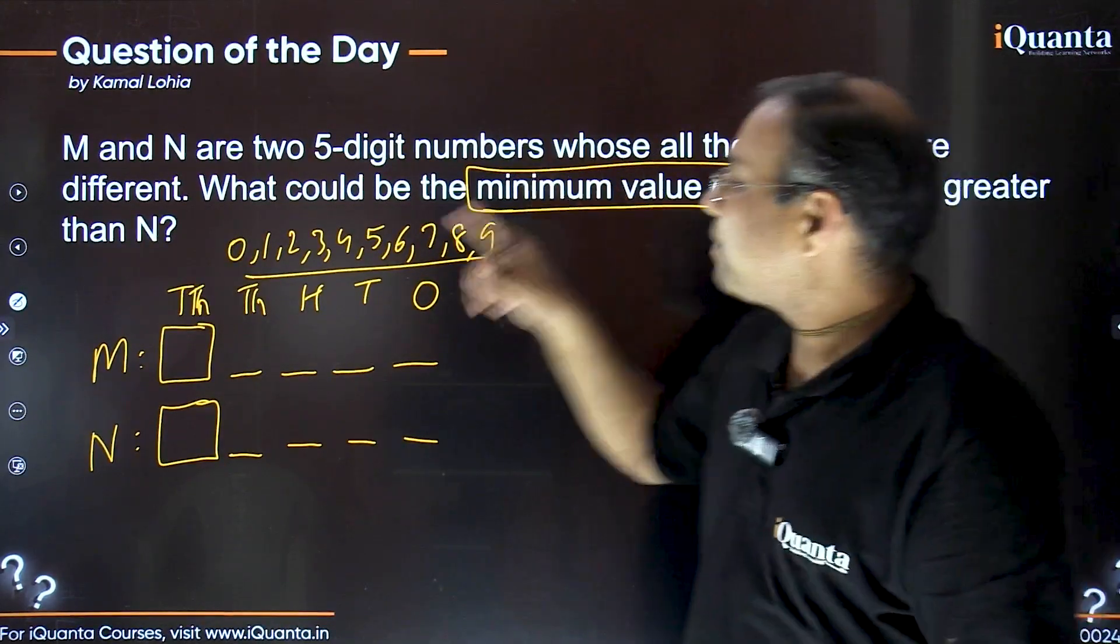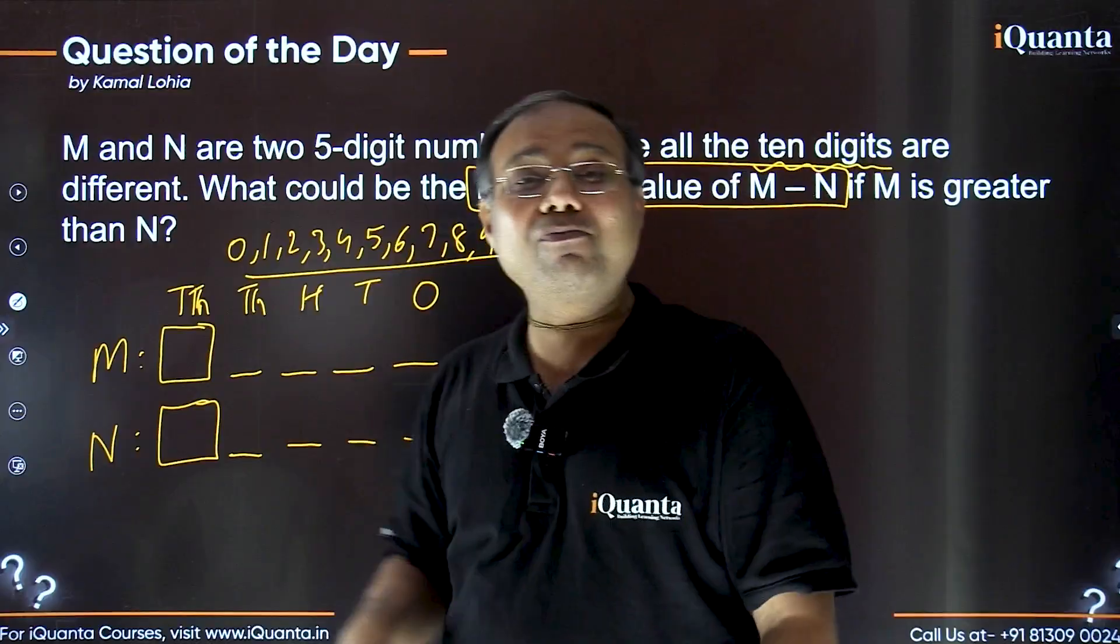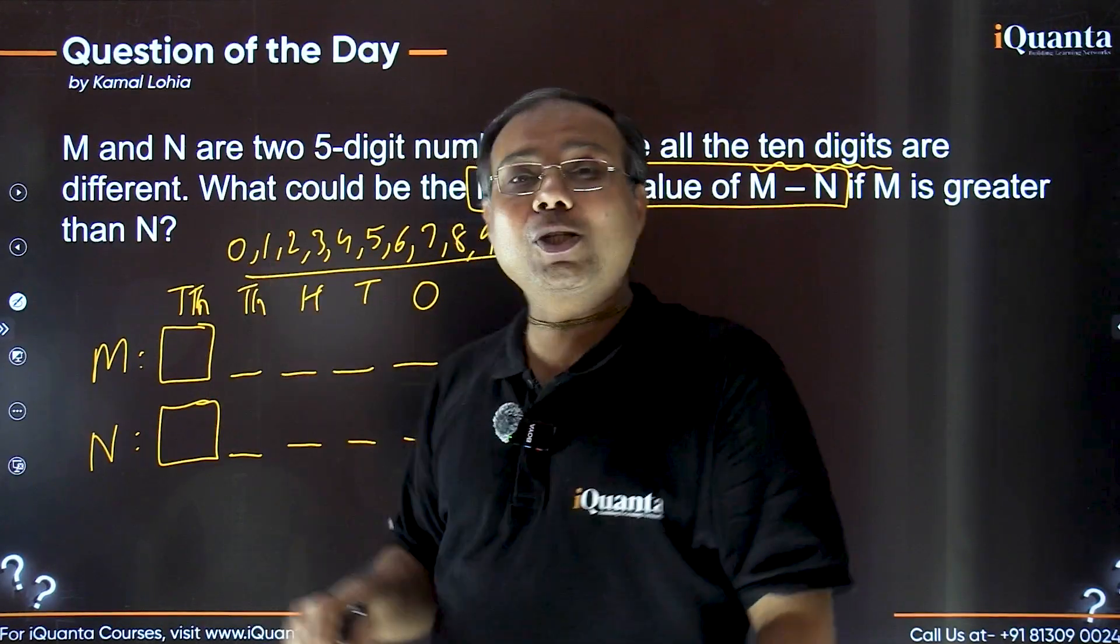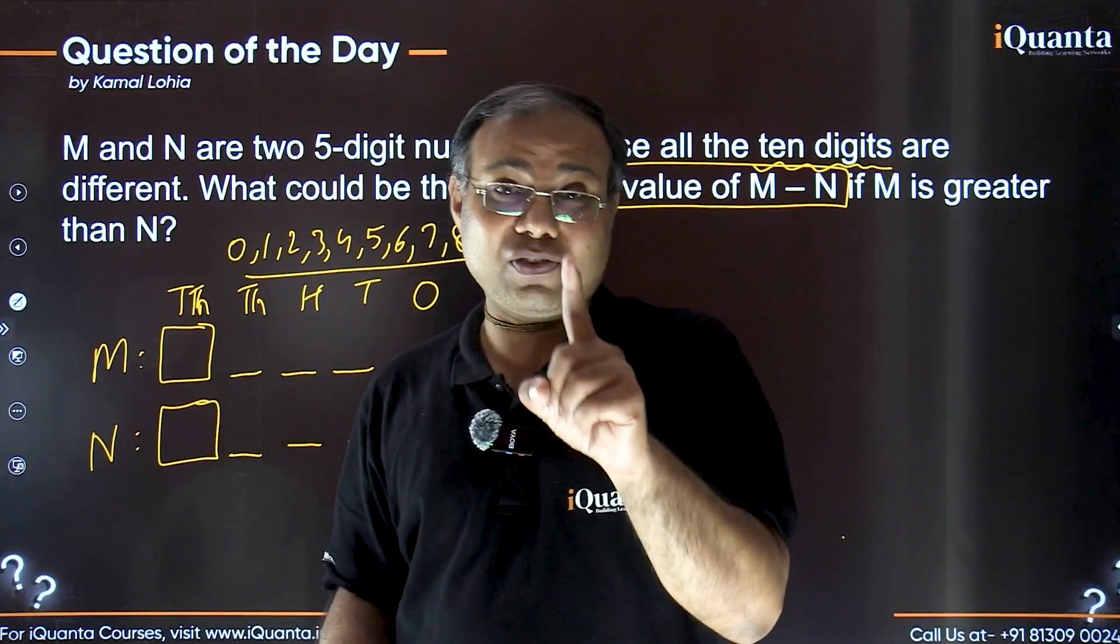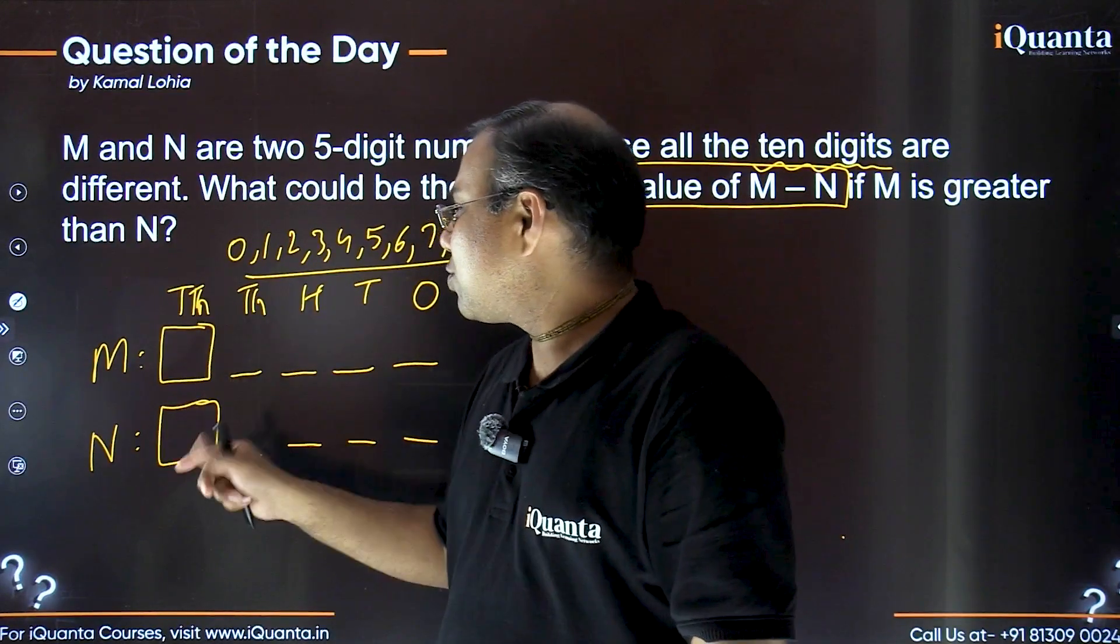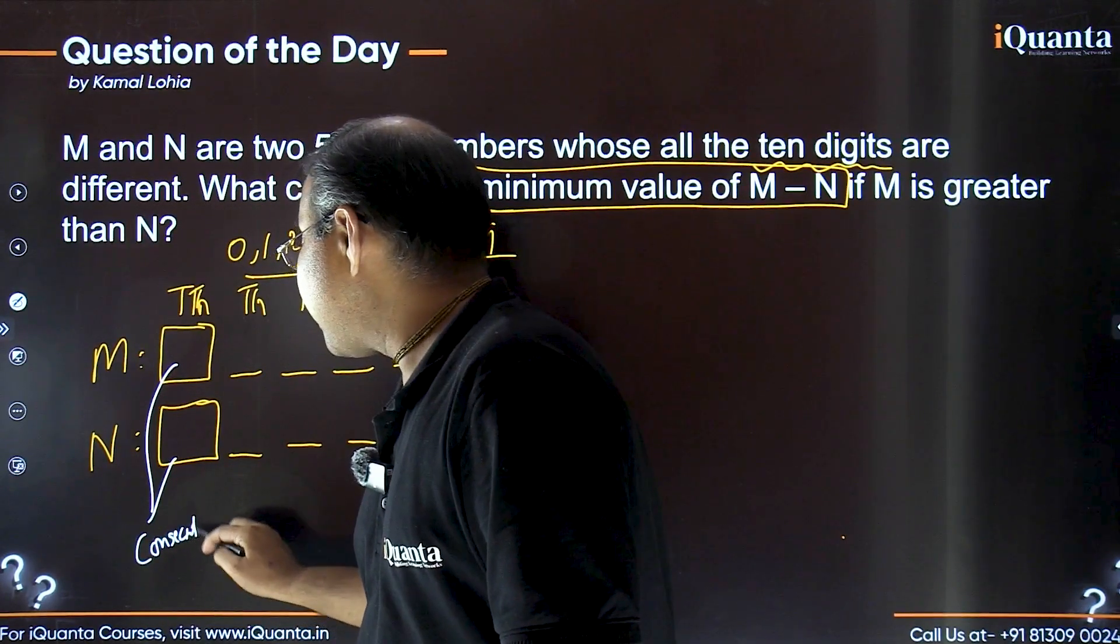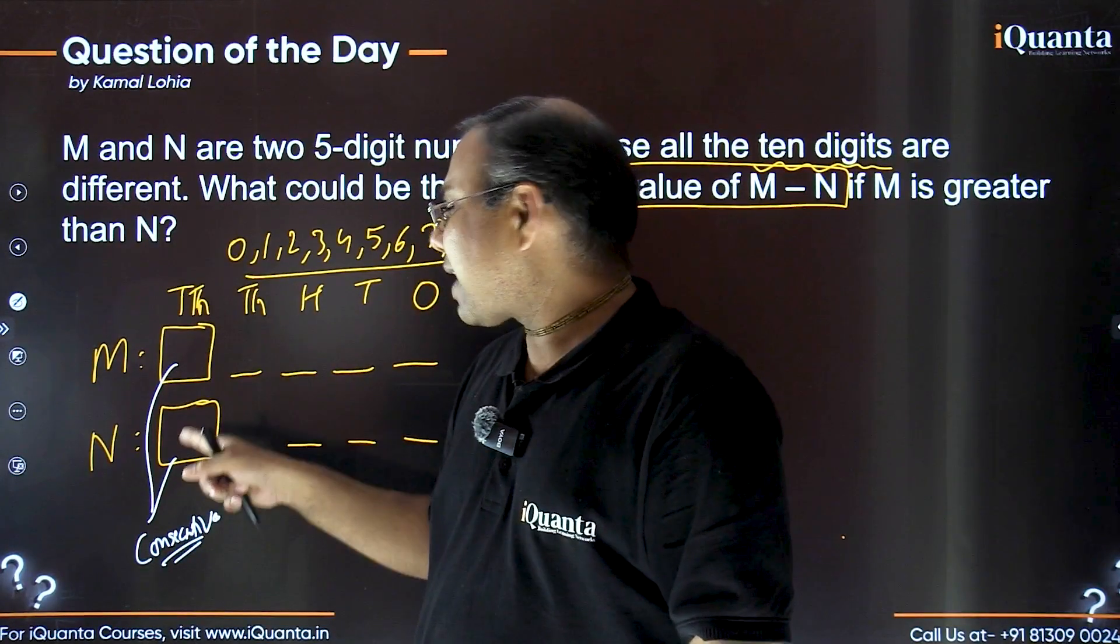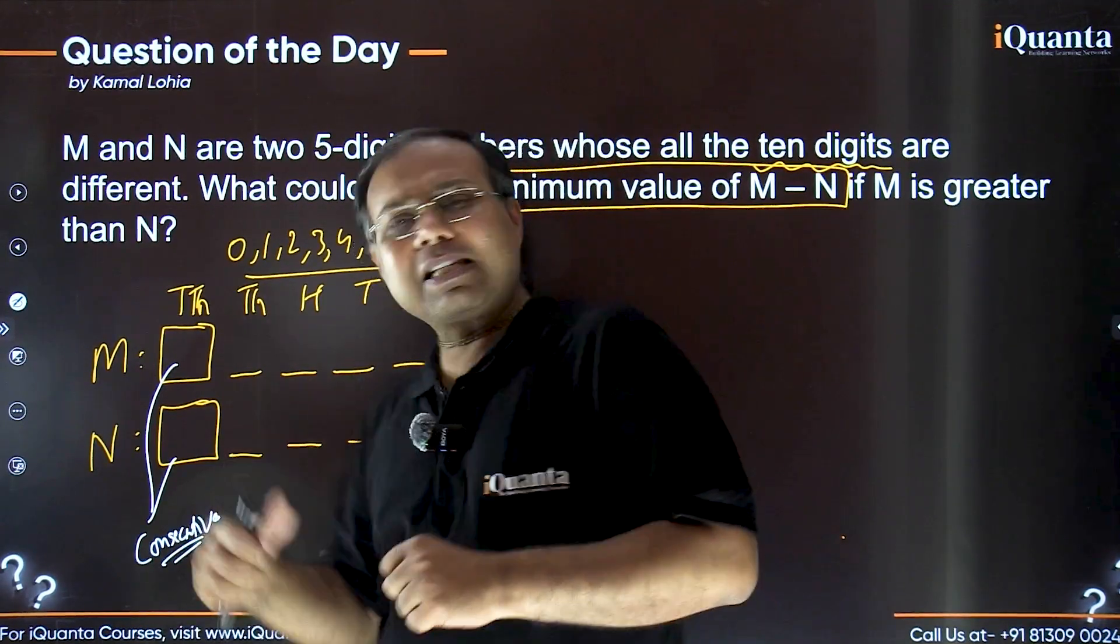Now, because I want to keep this difference to be minimum. Can you tell me in dono me difference kitna hona chahiye? To get the minimum answer, to get the minimum value. Of course, isko jitna jyada rakhenge utna to number badhta jayega na? To keep it smaller, this difference should also be smallest. But because they are not same, they are different numbers. So, the minimum difference possible for these two digits is one. Basically these two digits need to be consecutive digits. These two digits must be consecutive. Their difference should be one.